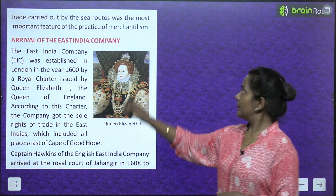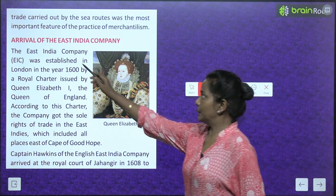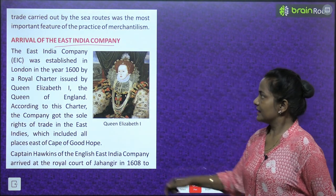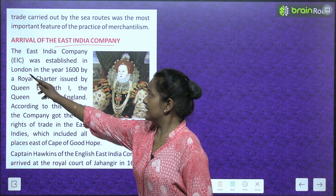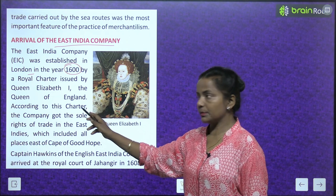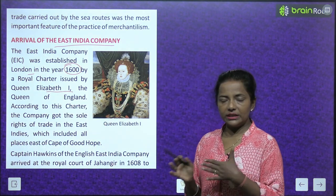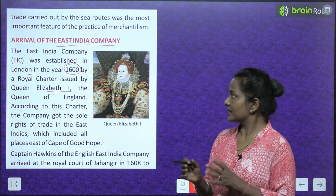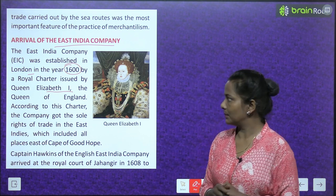Arrival of the East India Company: The East India Company (EIC) was established in London in the year 1600 by a royal charter issued by Queen Elizabeth I, the Queen of England. So at that time the East India Company was established in London.